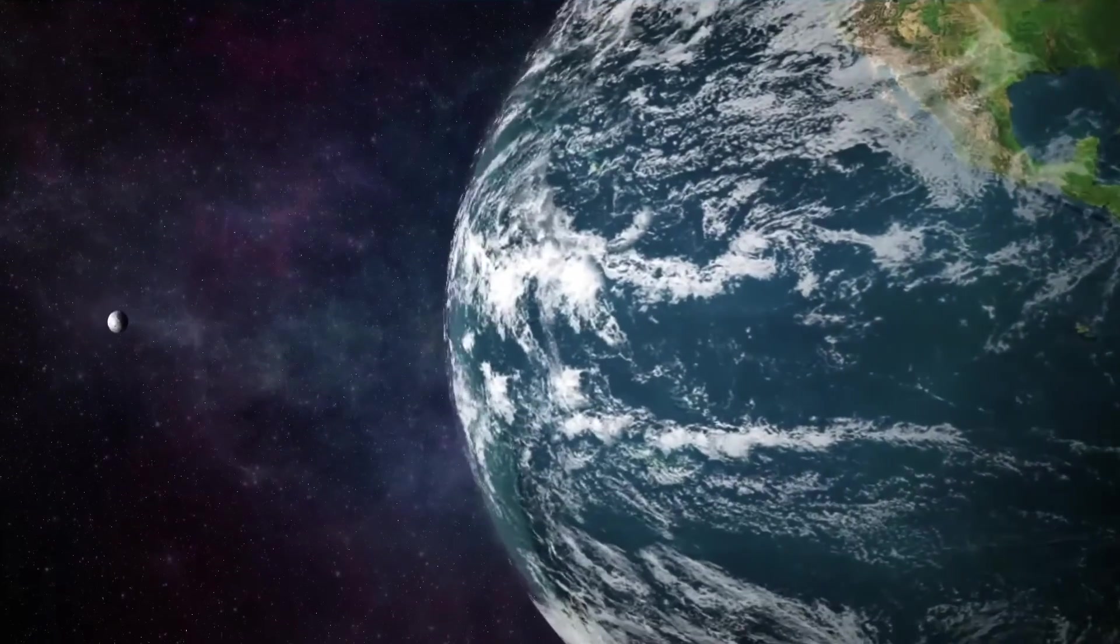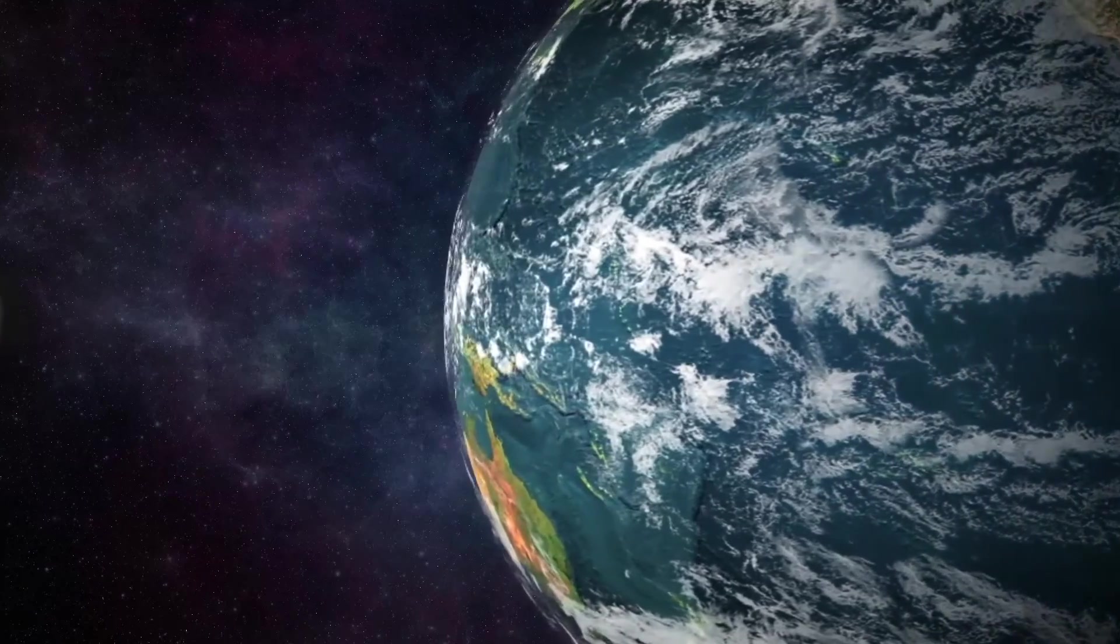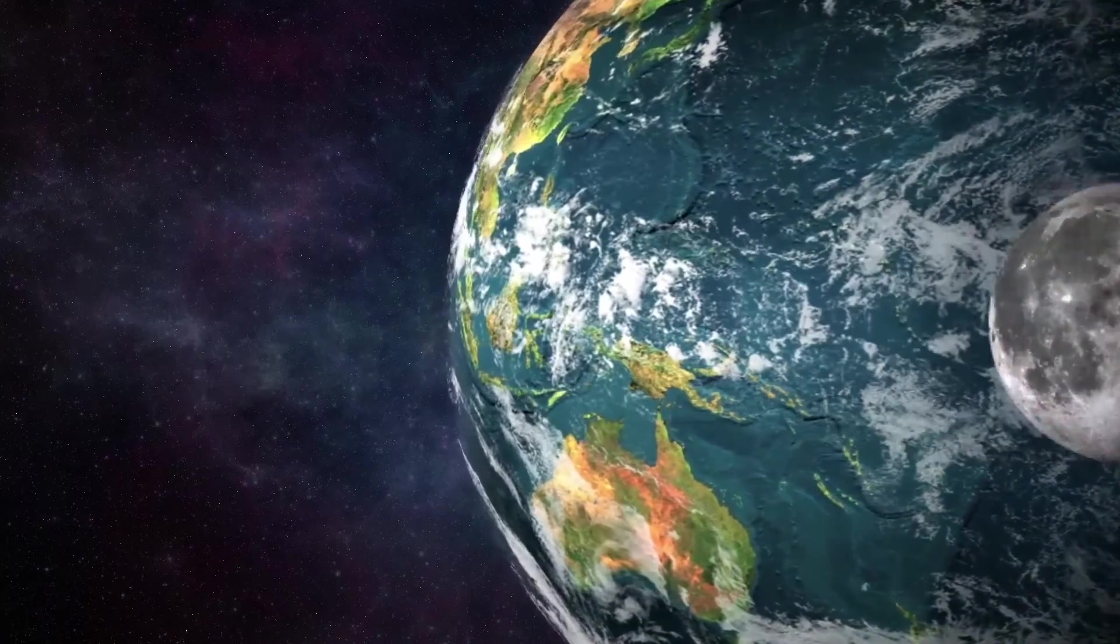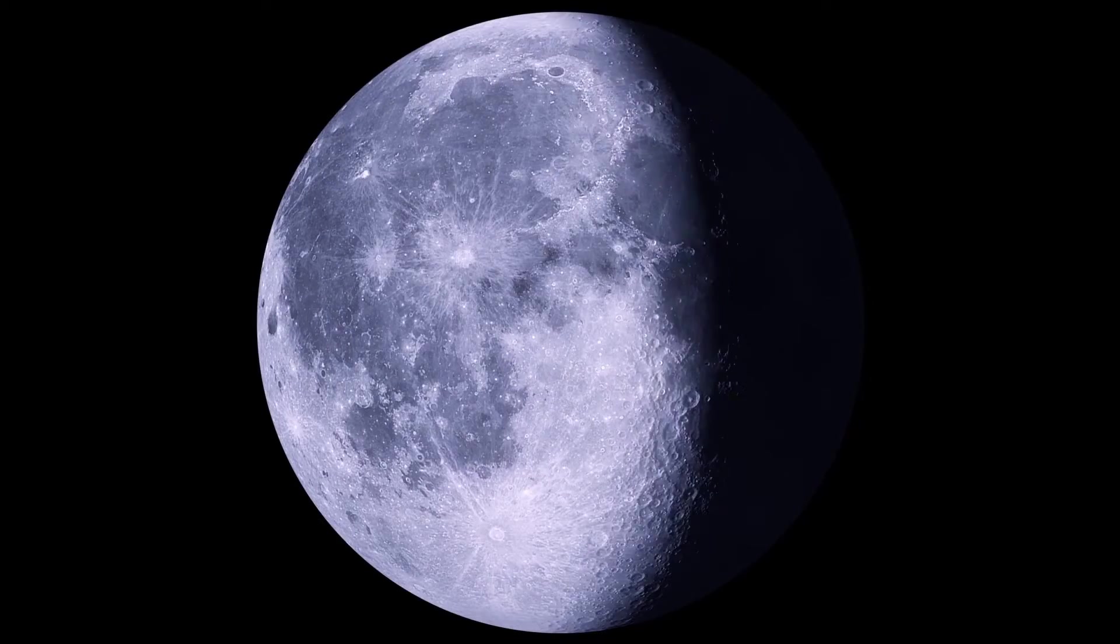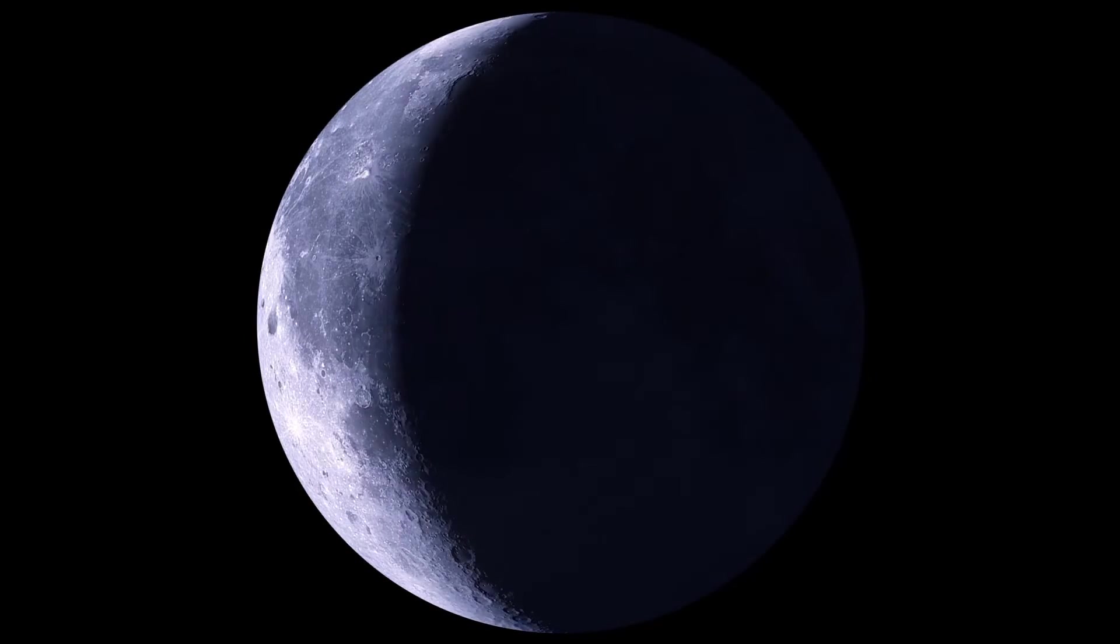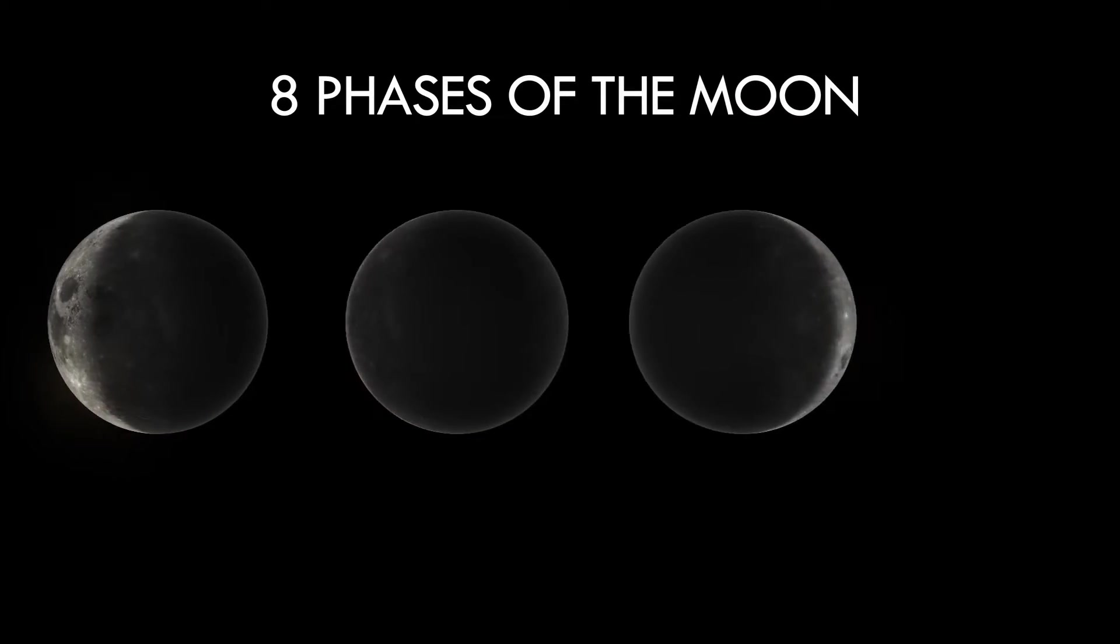As the Moon completes a revolution or an orbit around Earth in approximately 30 days, it appears in different shapes, depending on where it is located with respect to the Sun and the Earth. These varied shapes are referred to as the eight phases of the Moon.